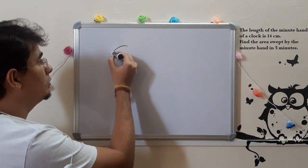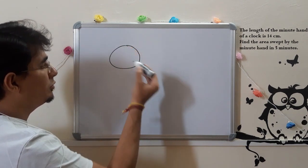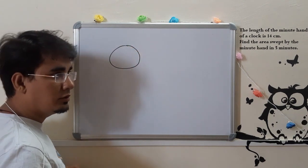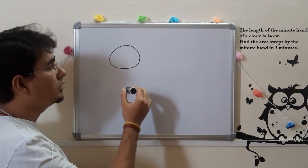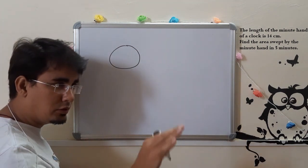So for a clock, we are going to see that the shape of a clock is circular.